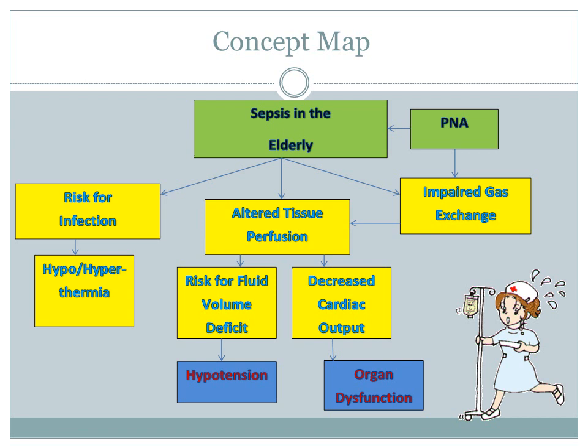This concept map shows a condensed version of sepsis and nursing diagnoses related to sepsis. As nurses, it is important to identify and intervene early in sepsis. Sepsis is related to infection and often caused by pneumonia in the elderly. It can lead to impaired gas exchange and altered tissue perfusion. A risk for fluid volume deficit and decreased cardiac output can lead to hypotension and organ dysfunction. Nursing interventions are crucial and include, but are not limited to, monitoring of vitals and labs.